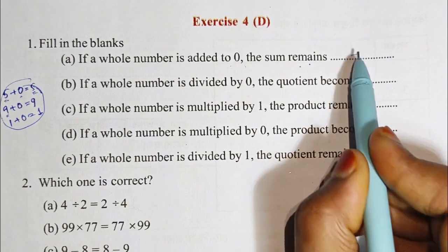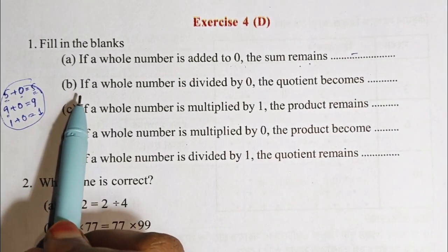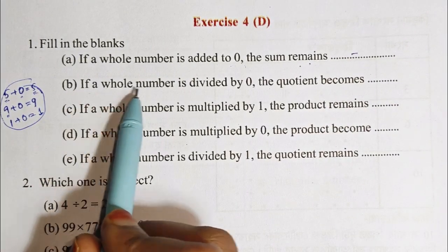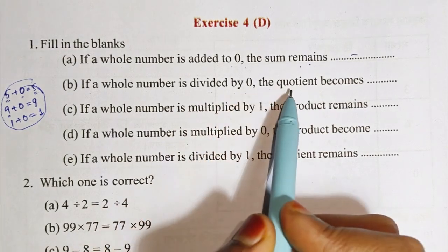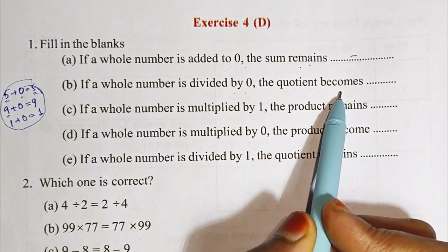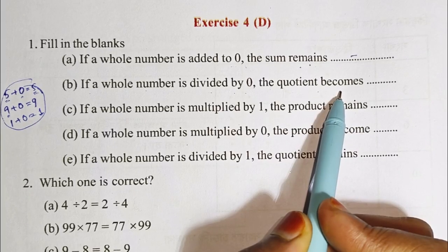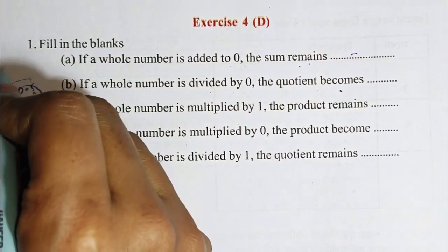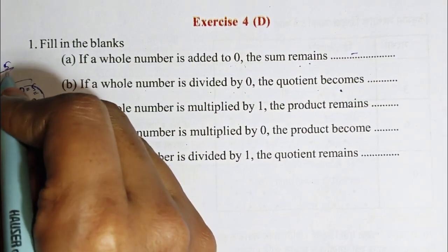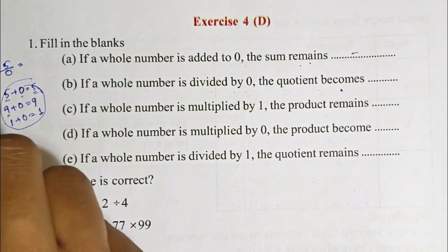Now we will write question number 2. If a whole number is divided by 0, then the question becomes undefined. We can use examples: 5 divided by 0 is undefined, 2 divided by 0 is undefined.